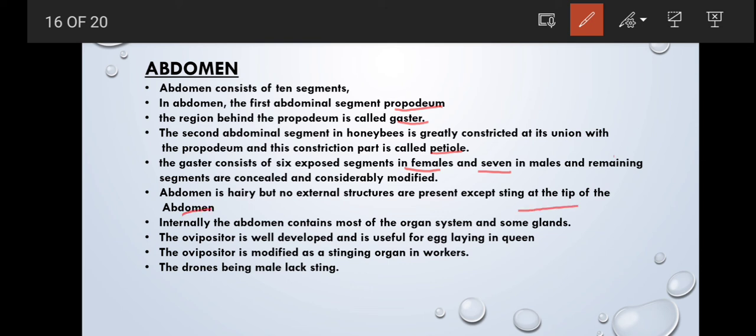Ovipositor is well developed in queens. Ovipositor is modified as a stinging organ in workers but drones are being sting-less.